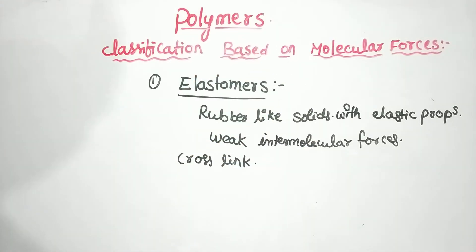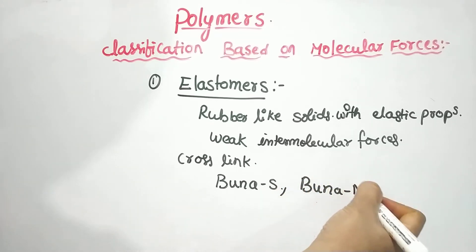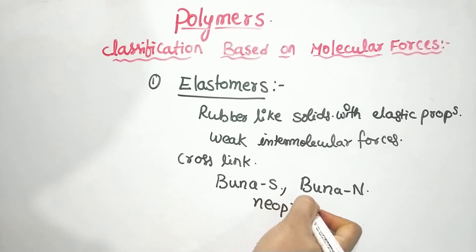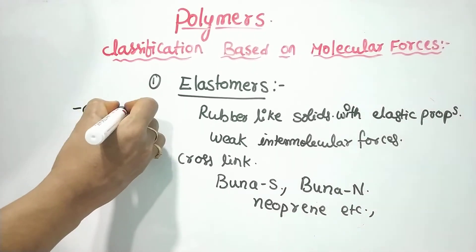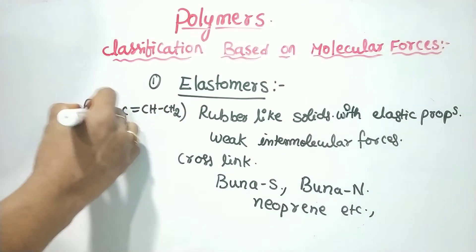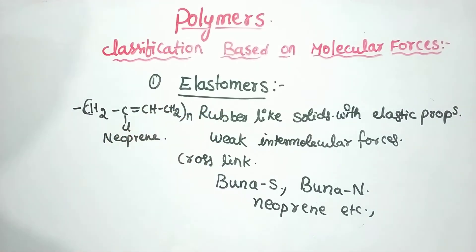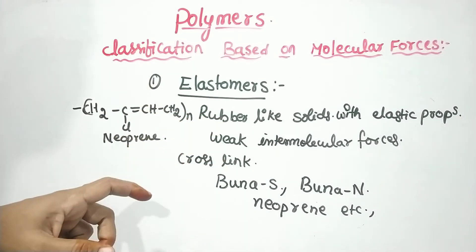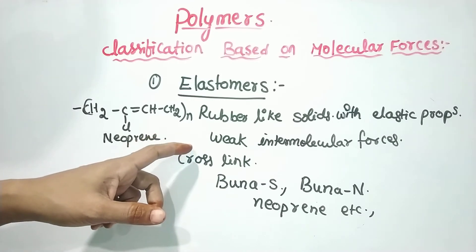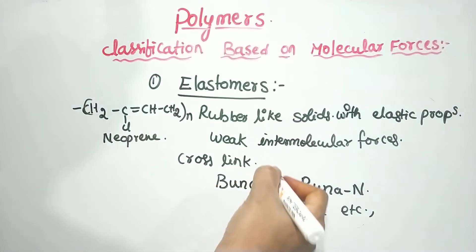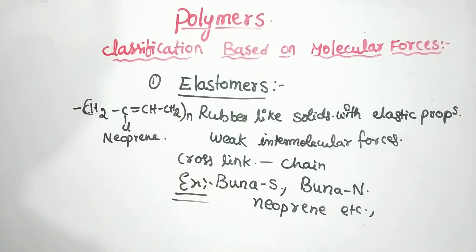Examples of elastomers are Buna-S, Buna-N, and Neoprene. Neoprene has the structure: C-Cl double bond, C-H, CH2, taken N times. Elastomers are rubber-like solids with elastic properties due to weak intermolecular forces of attraction, which permit the polymer to be stretched. Cross-links are introduced between the chains.